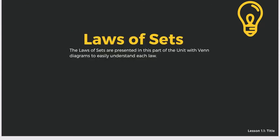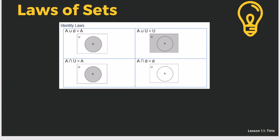Let's have the laws of sets, presented with Venn diagrams for easier understanding. First, the identity law: the shaded part of A in the universe shows that A union the empty set equals A, and A intersect the universe equals A. With the union of A and B under the universe, we can still extract A. But for A intersect null, there is no intersection, so we get no data.